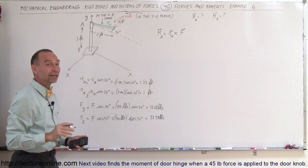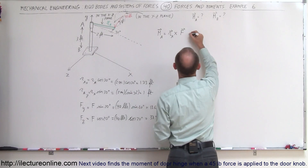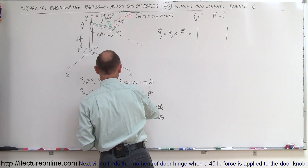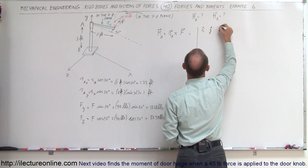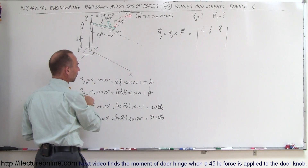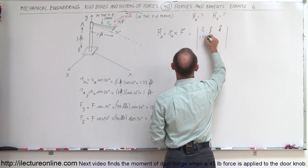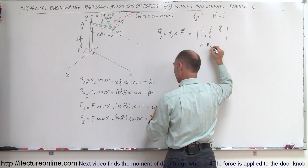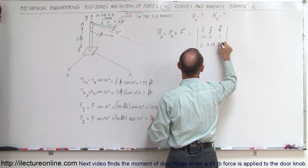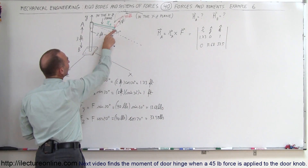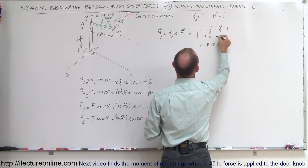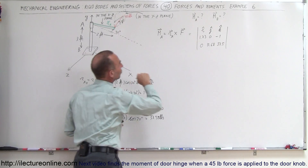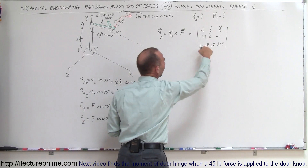Now we have the y and z components of the force, and the x and z components of R, so we can find the moment relative to A. Setting up the determinant with i, j, k: the components of R are 1.73 for x, 0 for y, and negative 1 for z — it's in the negative z direction. For the force components: 0 for x, negative 13.68 for y — it's in the negative y direction — and positive 37.5 for z. Let's check the signs and work this out.